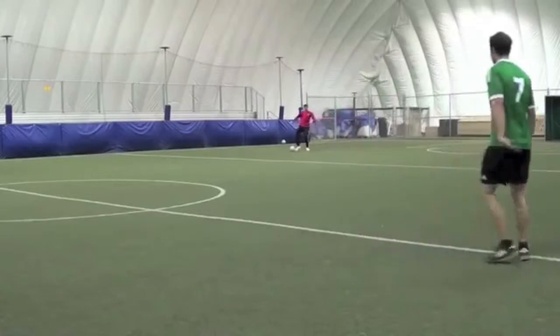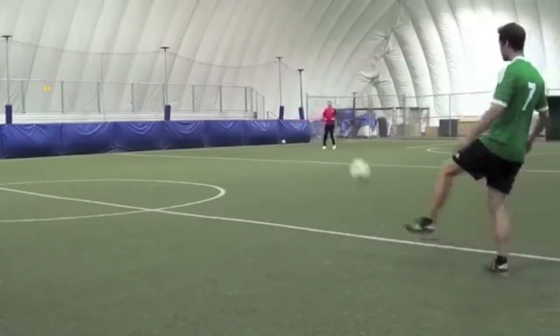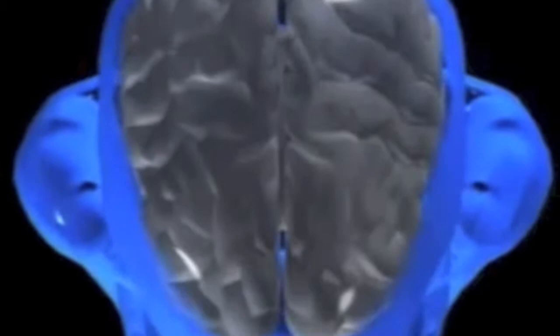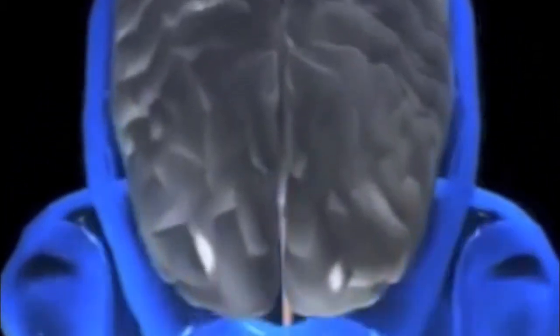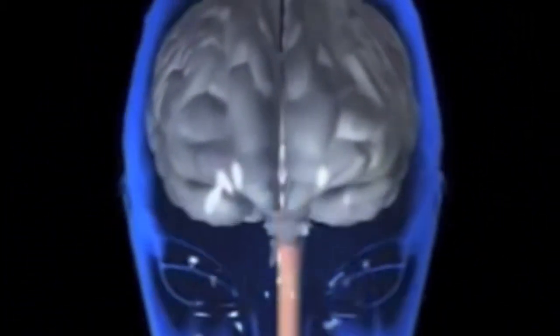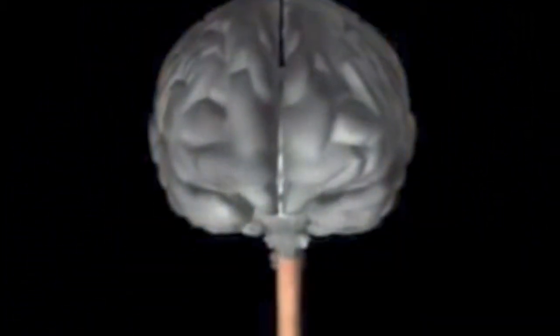To start off, my teammate kicks the ball towards me. In order to recognize that it is coming to me, I need to use multiple parts of my central nervous system, which include my brain and spinal cord.